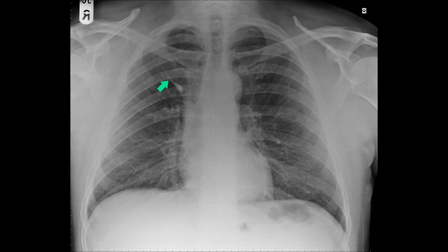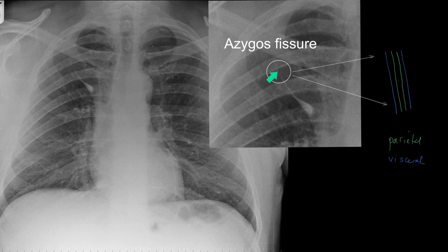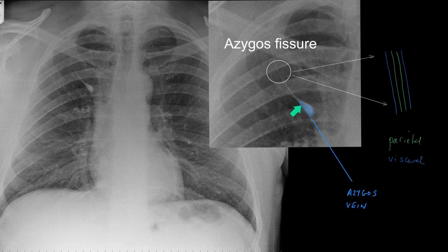Azygos lobe. Here is the azygos lobe on the chest radiograph. There is the azygos fissure. Here is the azygos lobe. And here is the azygos vein. It is said to occur in about 1% of normal chest radiographs. The composition of the azygos fissure is two parietal and two visceral pleural layers — so actually there are four pleural layers forming that fissure. At the bottom of the fissure is the azygos vein, which connects the azygos in a paravertebral position to the superior vena cava anteriorly.